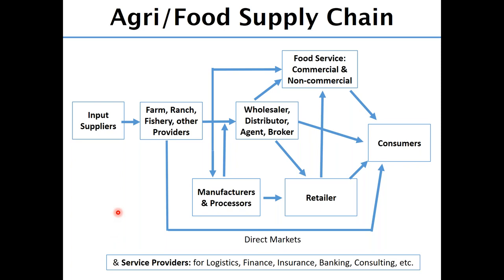The agri-food supply chain is a very complex supply chain with lots of entities. Here is a simple picture: there are producers — farmers, fish farmers, the growers — along with input suppliers who supply tractors, farming equipment, and fertilizers. The growers send their produce to processors, such as meat processors, then to wholesalers and distributors. Then there are commercial and non-commercial channels like restaurants, as well as retailers and supermarkets serving the consumer. And there are many service providers in logistics, finance, insurance, banking, and consulting. This is the broad landscape.